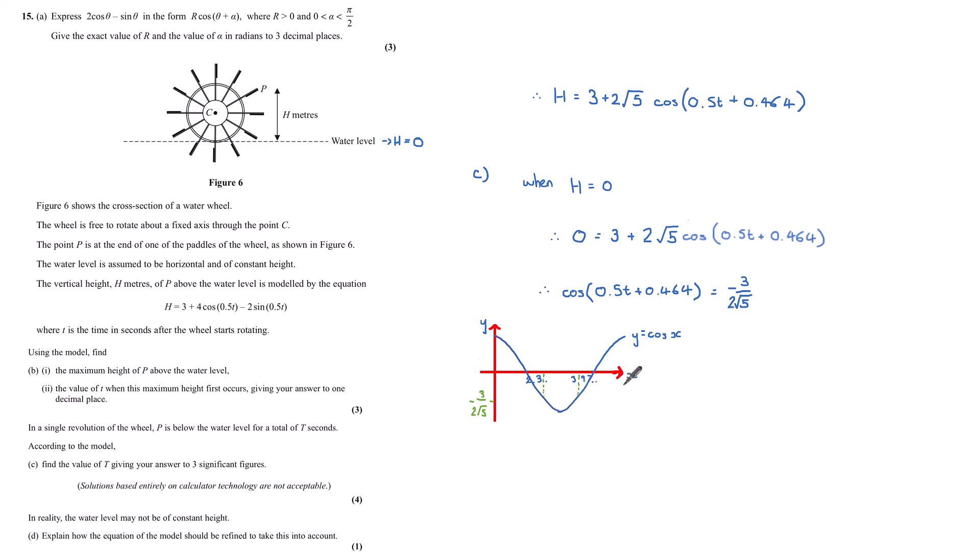When we do cos inverse of 3 over 2√5, we've seen these two values that we can find - the first on our calculator, the second subtracting it from 2π. So 0.5t + 0.464 equals first 2.3 and so on, then 3.97 and so on. To find these two values of t: for the first value, 2.3 subtract 0.464 times 2 gives me 3.7 and so on. The second value of t is 3.97 subtract 0.464 then multiplied by 2, which is 7.0 and so on.